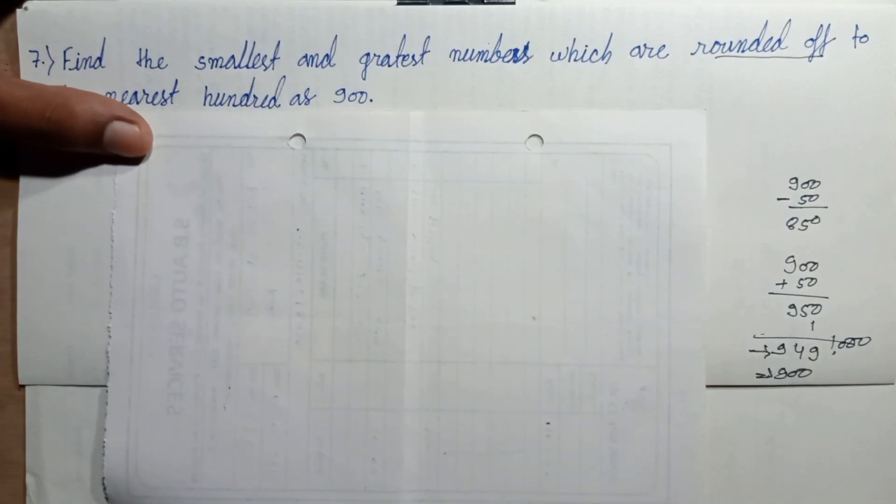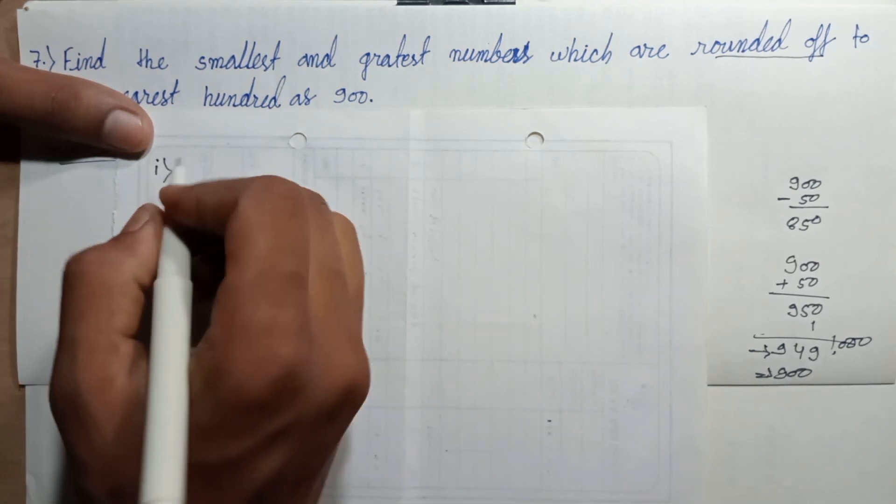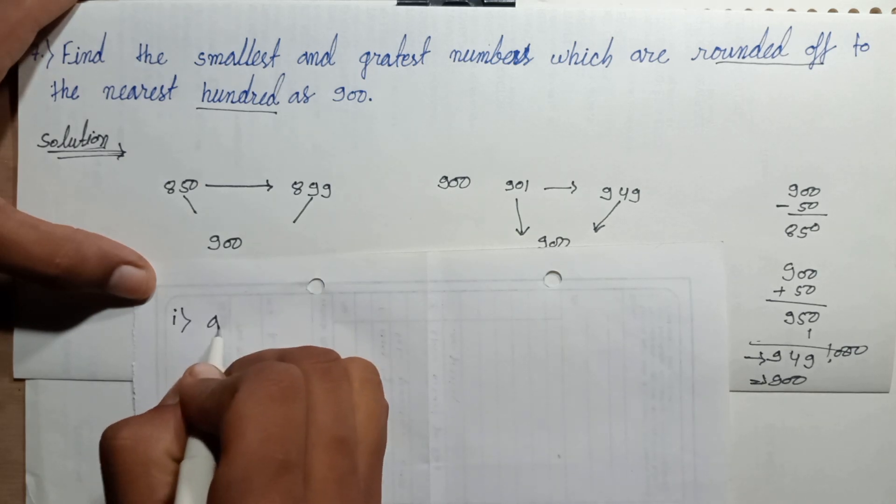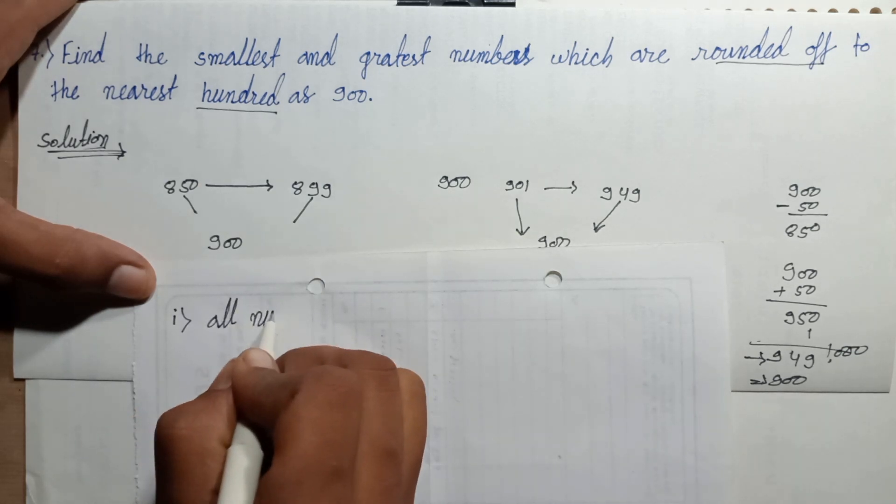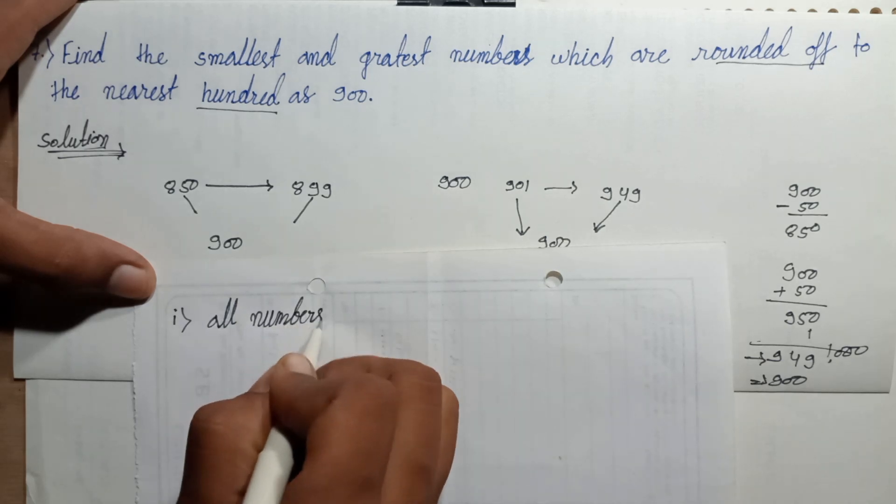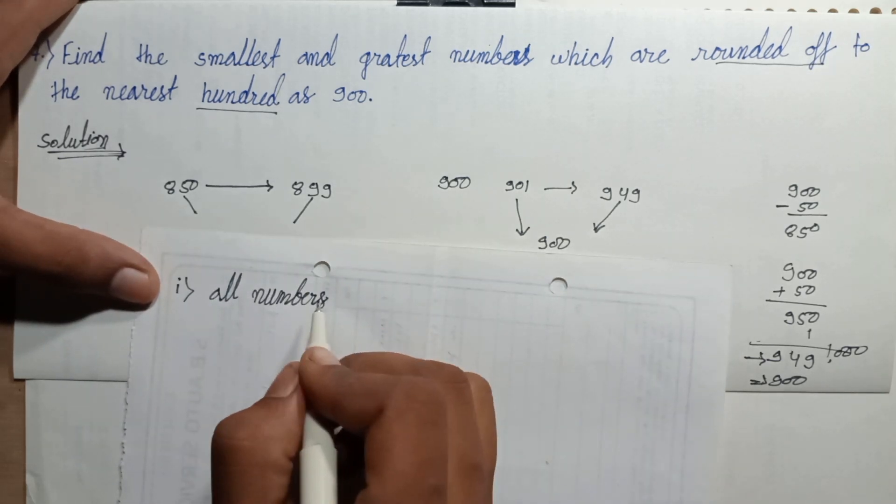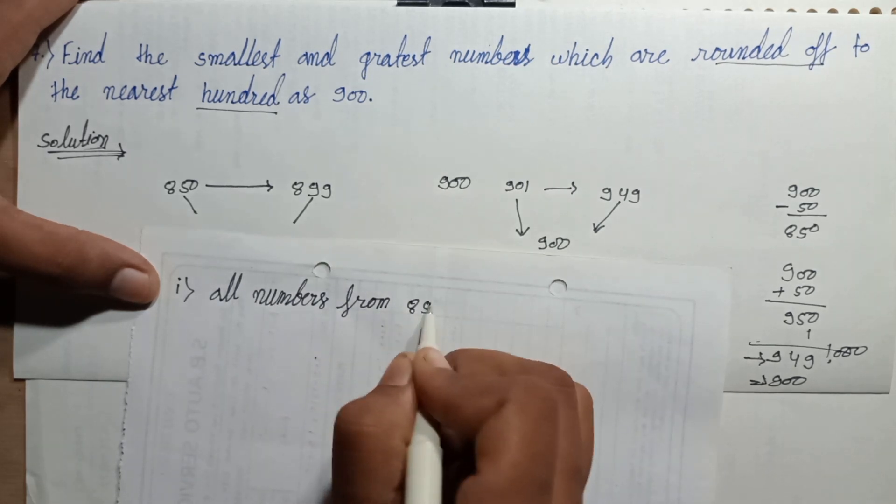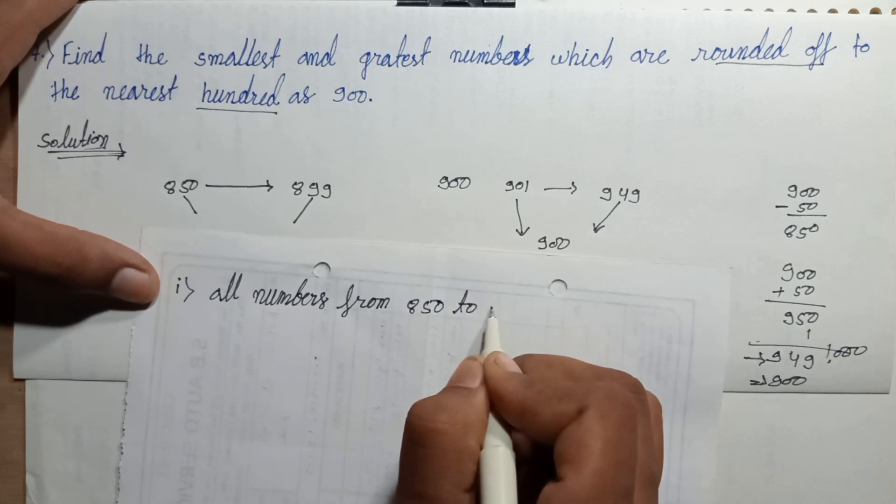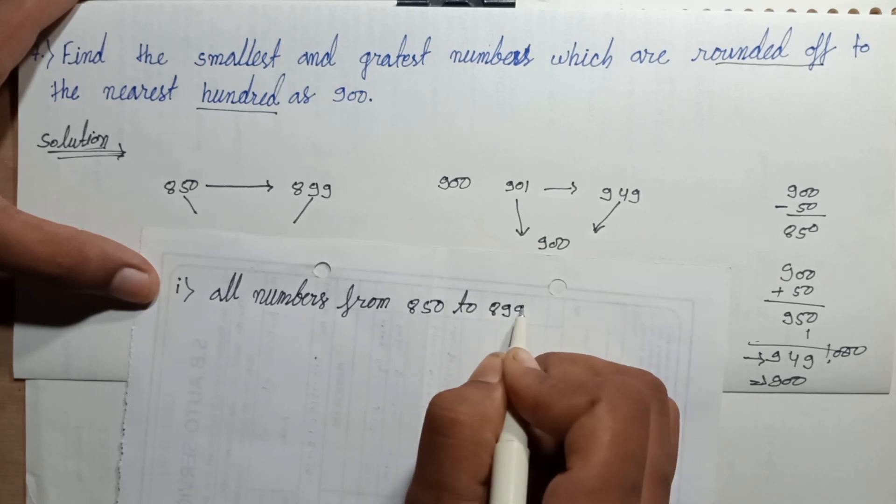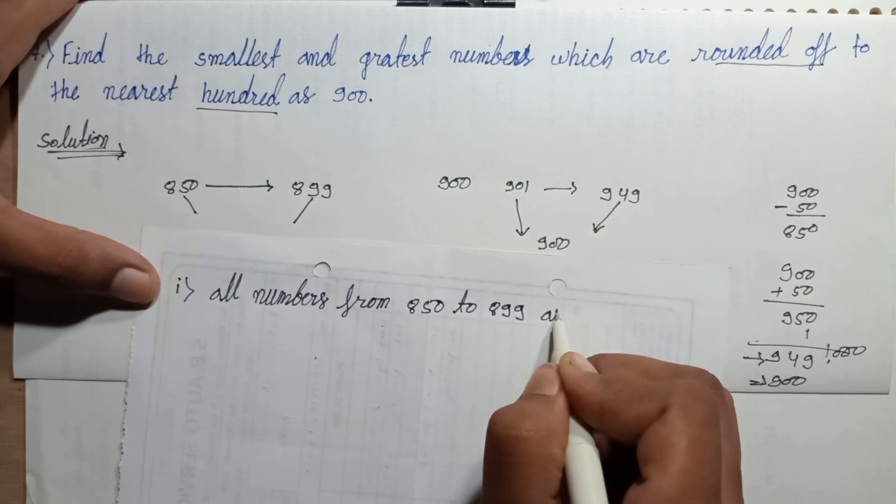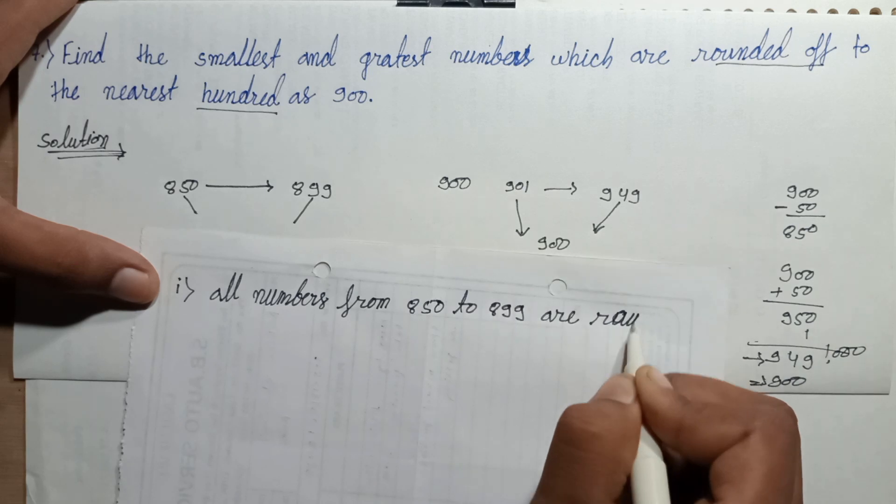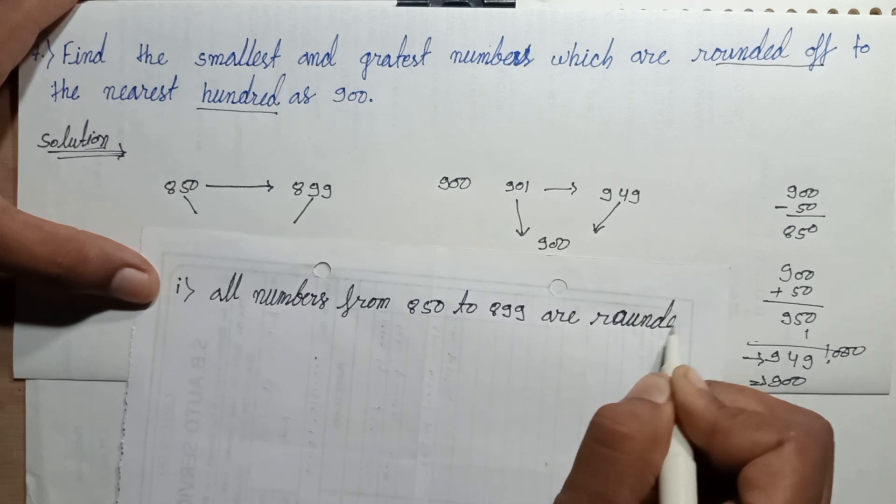First statement: all numbers from 850 to 899 are rounded of, are rounded up to 900.